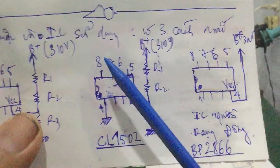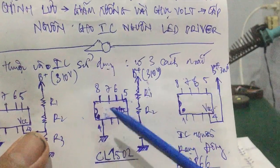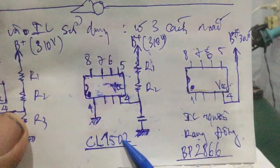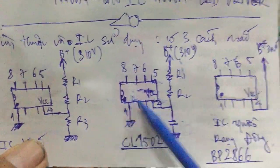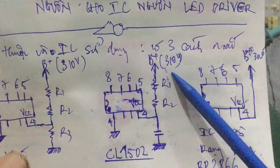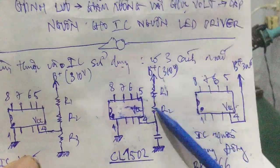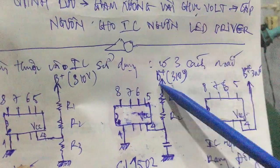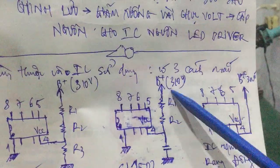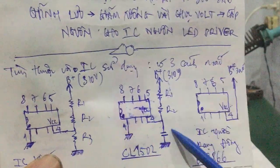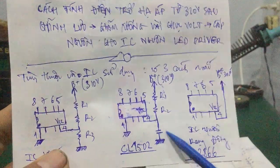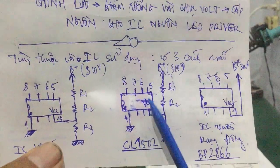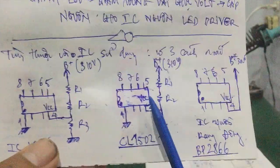Loại thứ 2 cũng là mạch nguồn LED driver tương tự, nhưng IC của nó sử dụng con CL1502. Thì chân số 4 của nó sẽ nhờ con điện trở R1, R2 hạ áp - nó giống như con điện trở hạ dòng - nó đưa thẳng vô, cấp lên từ nguồn B cộng đưa thẳng vô chân số 4 luôn qua R1, R2, bỏ qua R3. Còn cái tụ không phân cực nó nối xuống mát luôn, tụ dán luôn. Đây là loại cách mắc thứ 2, dùng IC CL1502.